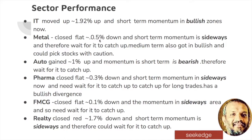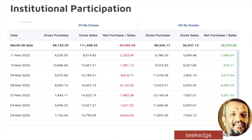Metal is flat close — it falls in the bullish zone short-term but has slipped, so wait. Auto gained 1% but is still in the bearish zone. Pharma is flat at 0.3%, in the sideways zone. Auto is the only sector in bearish — all others are sideways or IT is bullish. FMCG is also sideways and flat. Realty is about 2% down but remains with sideways momentum. Sideways momentum is seen across the sectors; bullish only in IT. Metal is slipping between bullish and sideways.